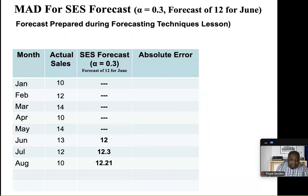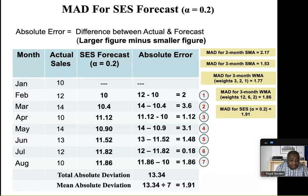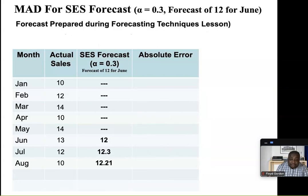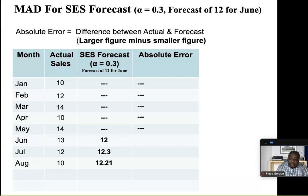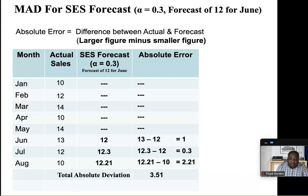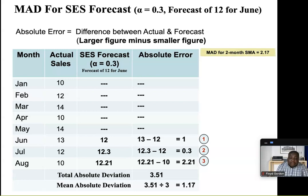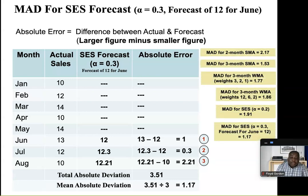Looking at what we have so far, the lowest MAD is still 1.53, representing the three-month simple moving average — so far it is still the most accurate. But we have one more technique to go. For this one — simple exponential smoothing with alpha = 0.3 — for June we have 1, for July 0.3, and for August 2.21, giving us a total absolute deviation of 3.51. That's just three figures, so we divide 3.51 by 3 to get 1.17.